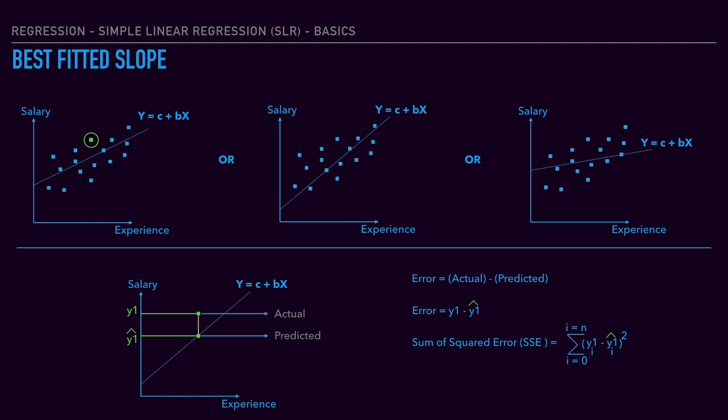This is the sum of squared errors. Sum of squared errors is nothing but summation of all the squared error values. Hence, the best fitted slope or equation has the minimum value of sum of squared errors.